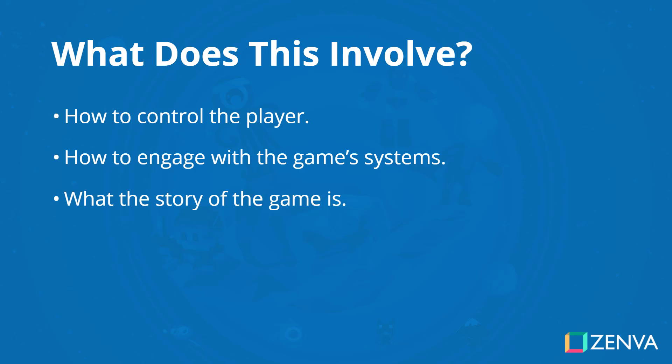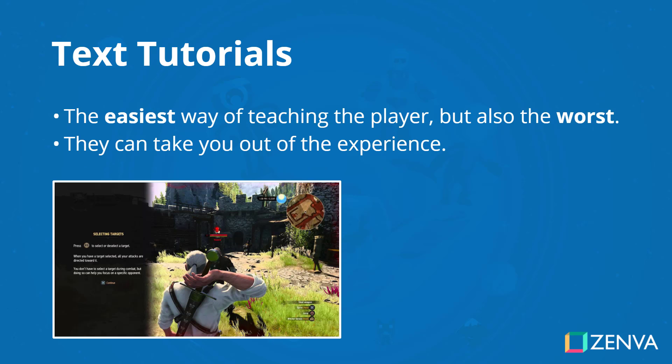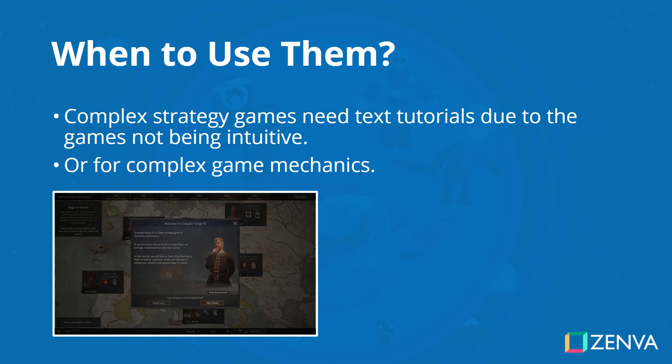Probably the easiest method is through text tutorials — pop-up text boxes that tell you what to do. Now, this is the easiest way of teaching a player, but it's also probably the worst in the sense that it can take you out of the experience. It takes away all the amazing opportunities you have to add tutorials based on the design of your levels and how intuitive they are. With text tutorials, there are cases where they should be used.